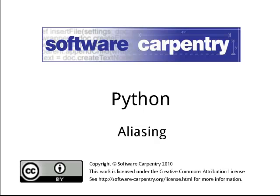Hello and welcome to the seventh episode of the Software Carpentry Lecture on Python. In this episode, we'll take a break from introducing new features of the language and talk a bit about what happens when one piece of data has two or more names.